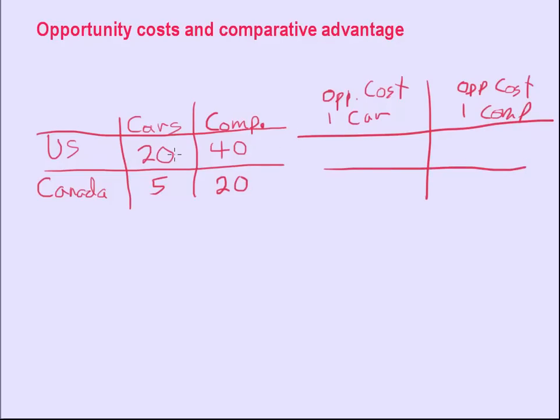So looking at cars, in this case, if we produce 20 cars, we give up 40 computers. An easy way per car is just take 40 divided by 20. Divide both sides by 20. There's several other ways of doing it. And that's going to give you the opportunity cost of producing cars, each car is two.